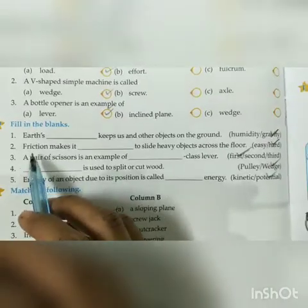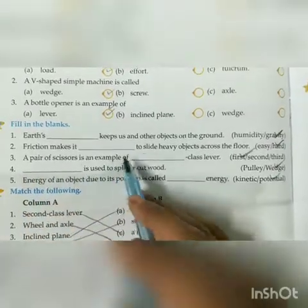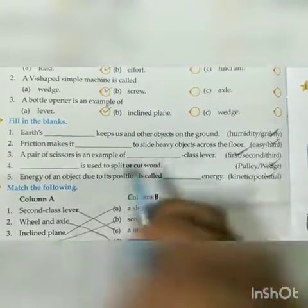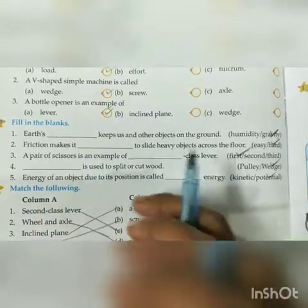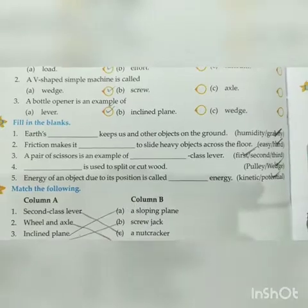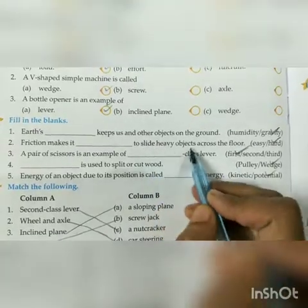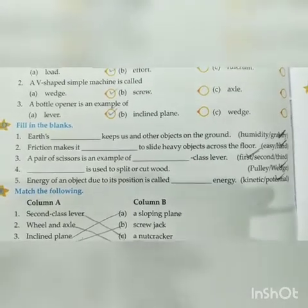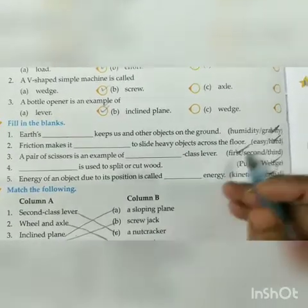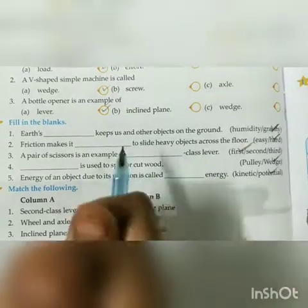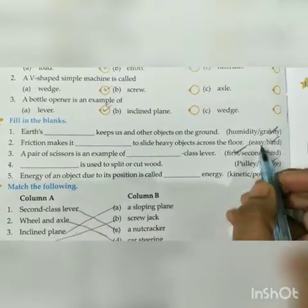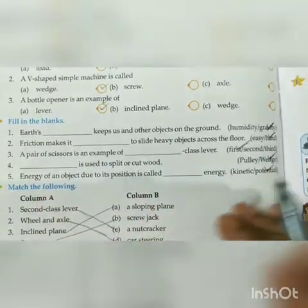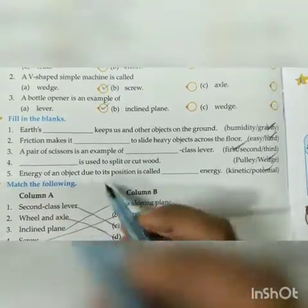Next blank: friction makes it hard to slide heavy objects across the floor. Because of friction, sliding heavy objects on the floor becomes difficult. This is because friction slows down our movement. The answer is hard.